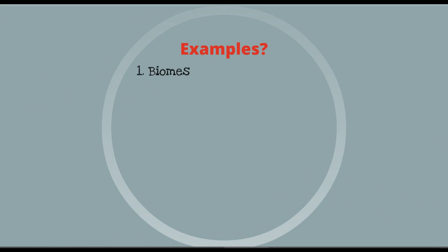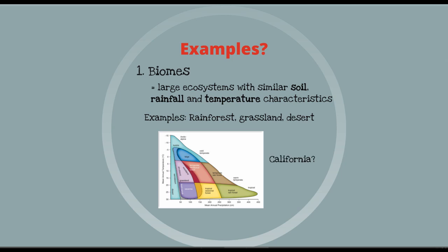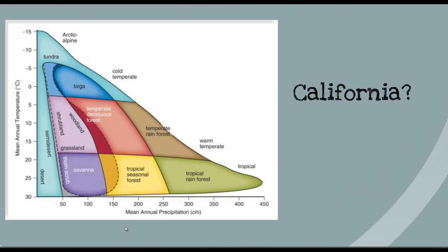So let's look at some examples of ecosystems. A biome is an example of an ecosystem, and I would guess this is what most of you thought of when you think of ecosystems. They are large areas with similar soil, rainfall, and temperature characteristics. Rainforests, grasslands, and deserts are all examples of biomes. What they have in common are the abiotic characteristics of rainfall and temperature, which in turn lead to specific kinds of plants, and those lead to specific kinds of animals. This graphic shows the interaction of rainfall and temperature to create the major biomes we see on our planet.